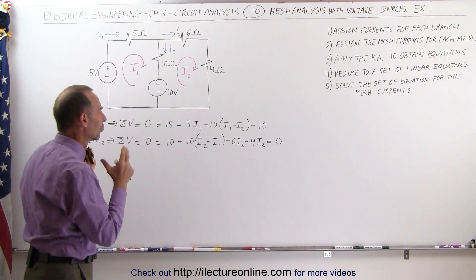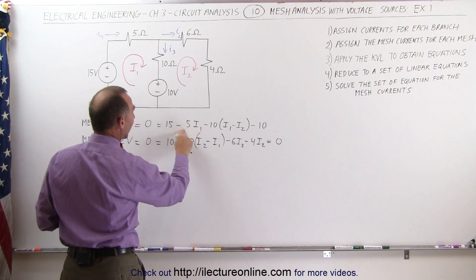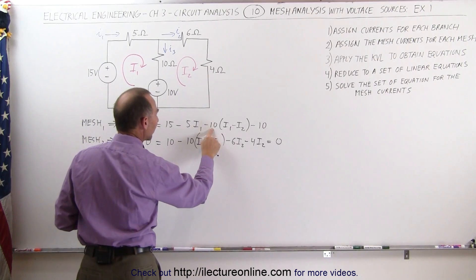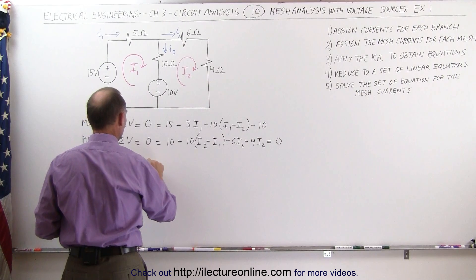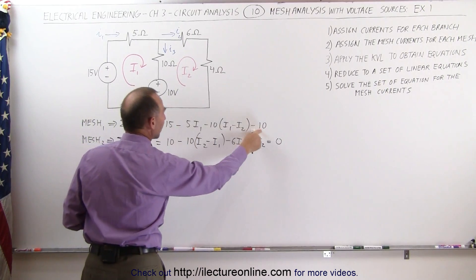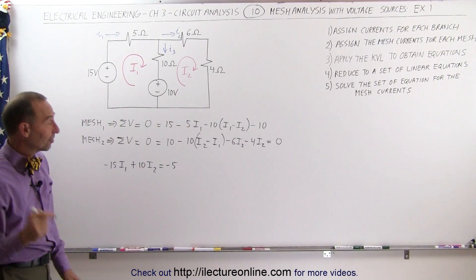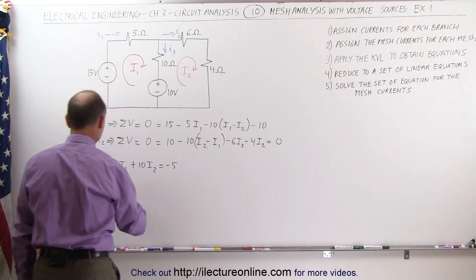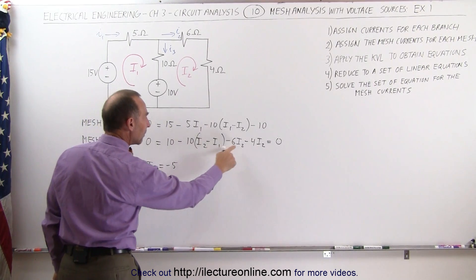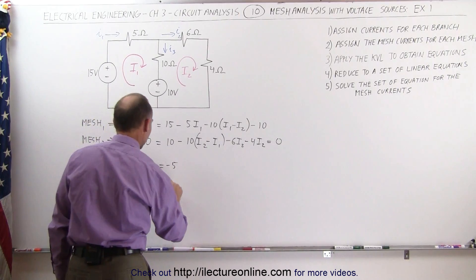Here are the two equations. We're going to simplify them to find I1 and I2. The first equation: minus 5I1 minus 10I1 is minus 15I1; minus 10 times minus I2 is plus 10I2; bringing 15 across gives minus 15, and bringing minus 10 across gives plus 10, so minus 15 plus 10 is minus 5. That's our first simplified equation. The second equation has plus 10I1; minus 10I2 and minus 10I2 gives minus 20I2; bringing the 10 across gives minus 10.